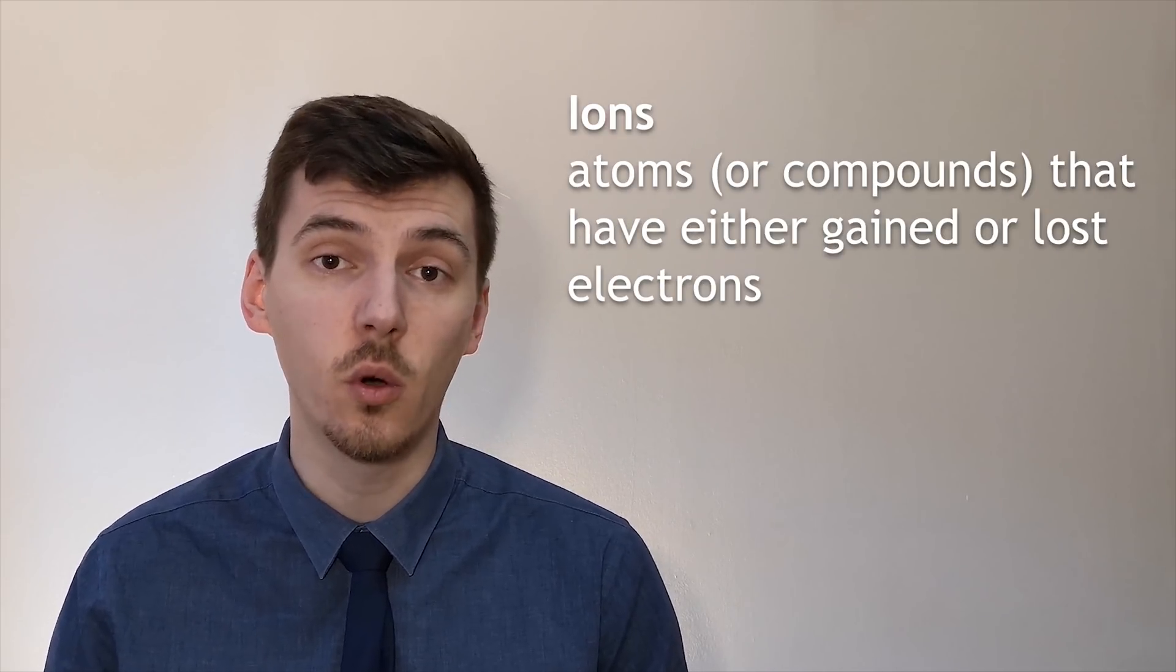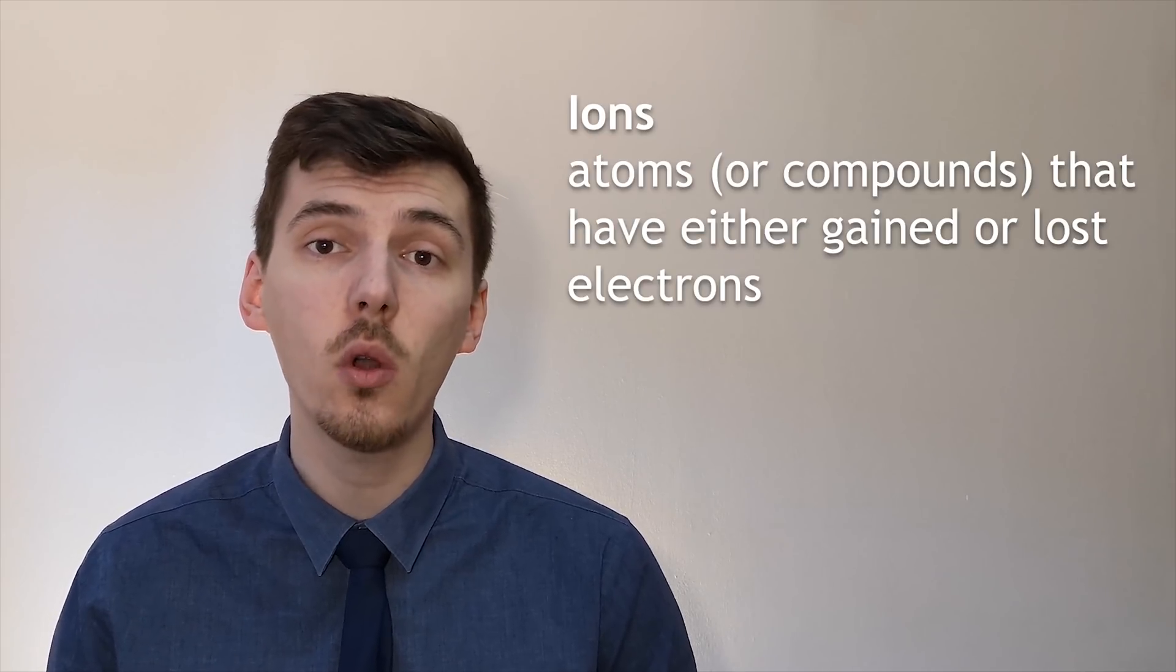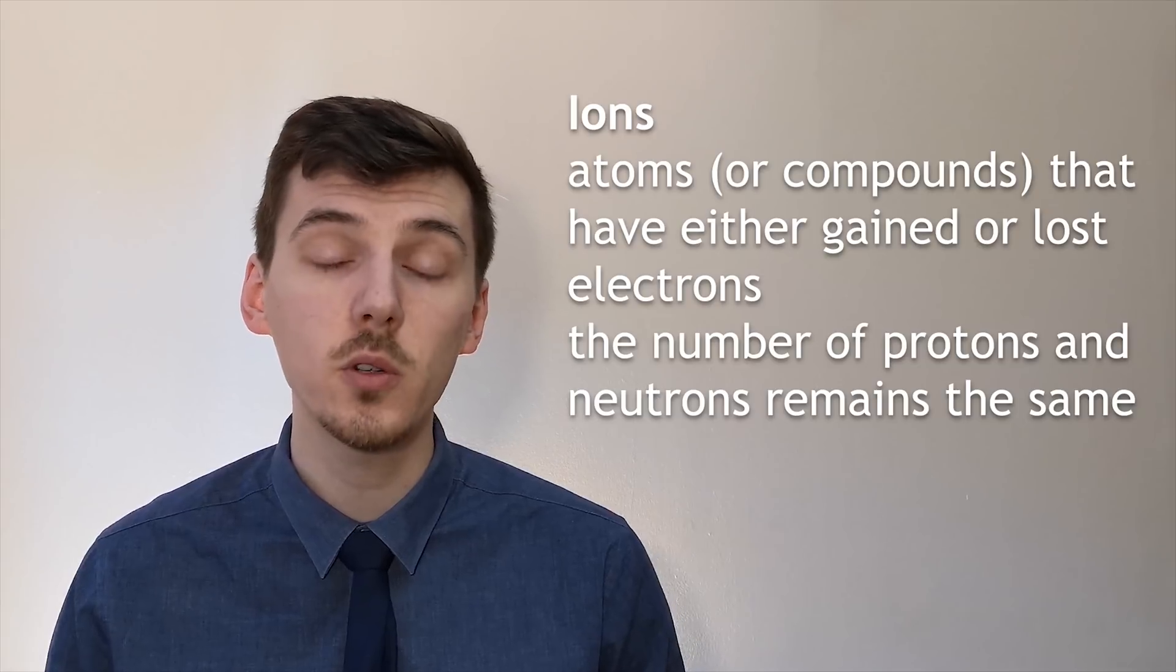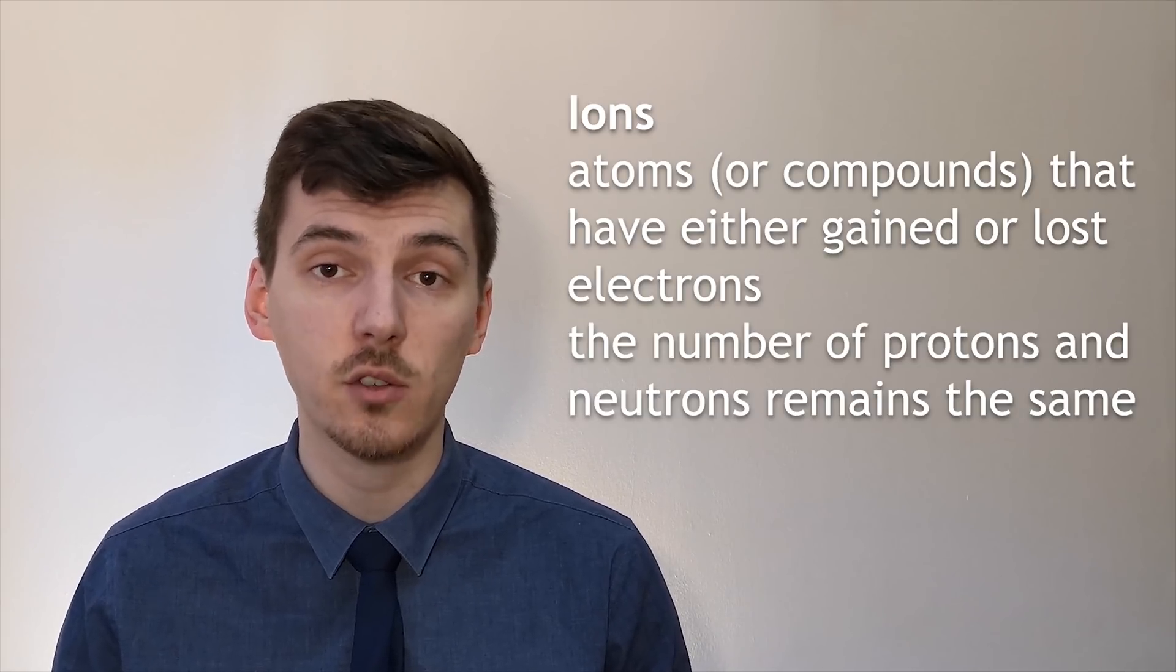Ions are atoms or compounds, as we'll see in a later video, that have either gained or lost electrons. It's important to note that when ions are formed the only thing that changes is the electron number.